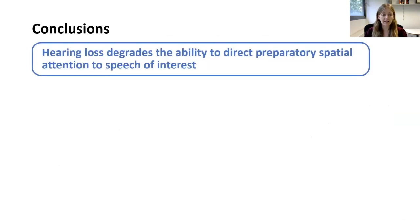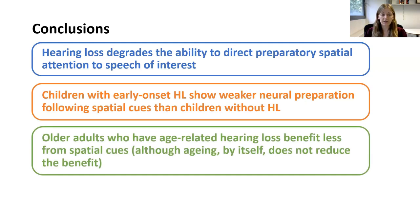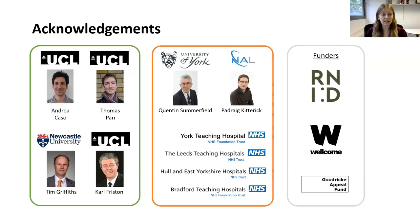To conclude: hearing loss degrades the ability to direct preparatory spatial attention to speech of interest. Children with early onset hearing loss show weaker neural preparation following spatial cues than children without hearing loss, and older adults who have age-related hearing loss benefit less from spatial cues — although ageing by itself does not seem to reduce the benefit. I'd like to finish by thanking the people who contributed to the work, the funders, and thank you for listening.